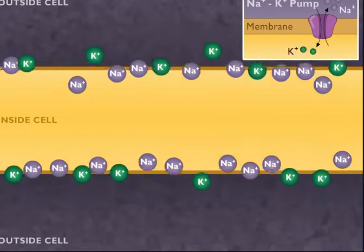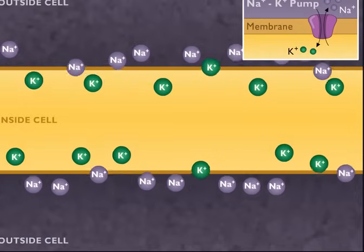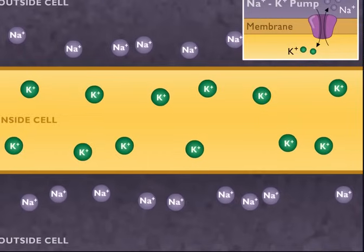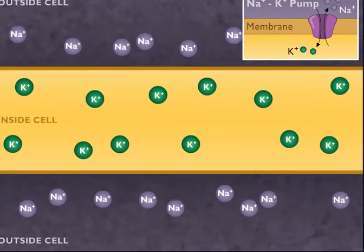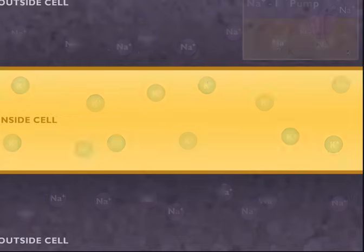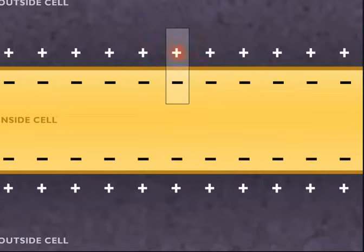While other channels allow some flow of potassium ions back out of the cell, the sodium ions cannot easily get back in to replace the lost positive charges. The overall result is that the exterior of the cell has a net positive charge and the interior has a net negative charge.